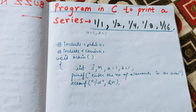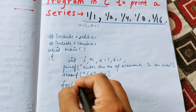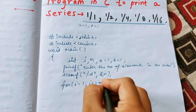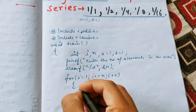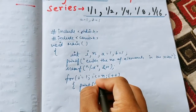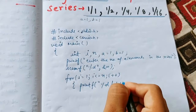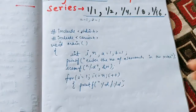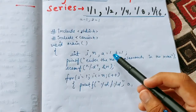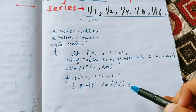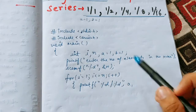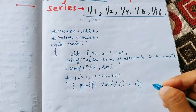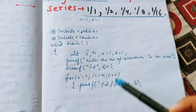Suppose the user gives n as 3, so n stores 3. Now we use a for loop: for i equal to 1, i less than or equal to n, i plus plus. Inside the loop, we use printf with format '%d/%d' — the first %d corresponds to a (the numerator, always 1) and the second %d corresponds to b (the denominator). Every iteration the numerator a stays 1.